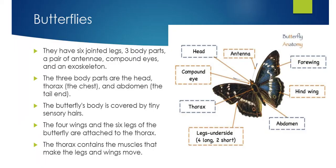Here's a quick overview of the butterfly body so you can see the change from a caterpillar to a butterfly. Butterflies have six legs, three different body parts, a pair of antennae, compound eyes, and an exoskeleton.